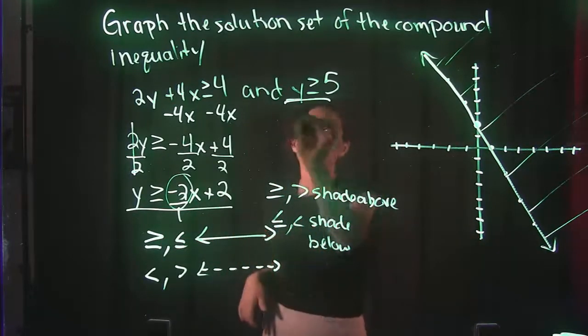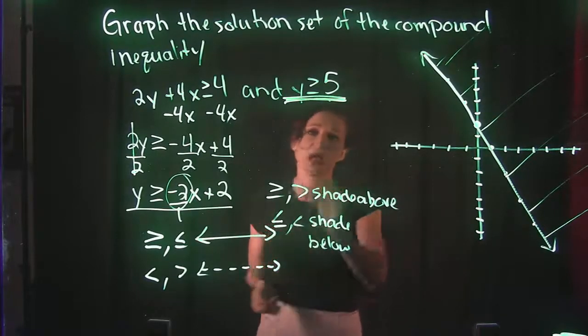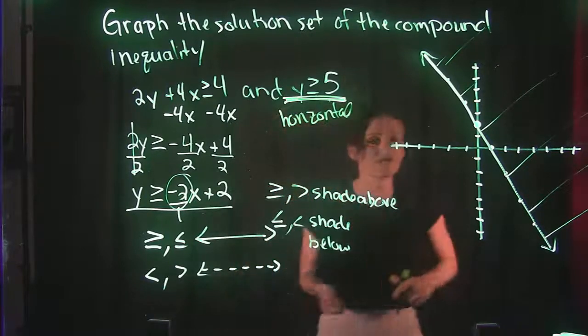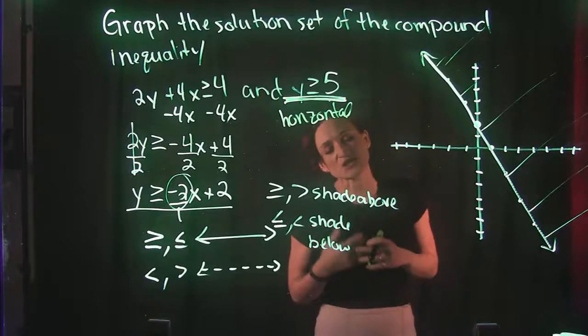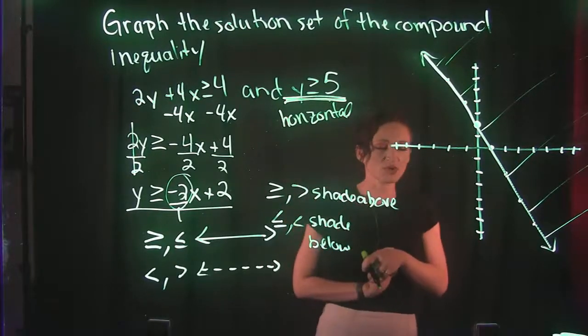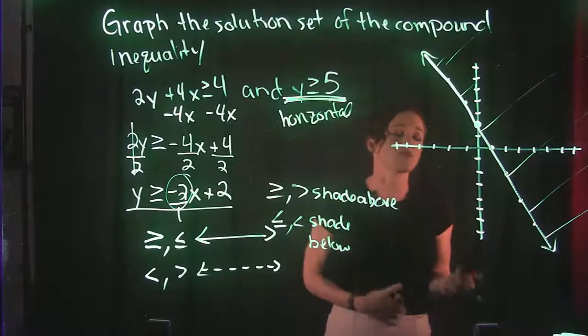For our other line, we have y is greater than or equal to 5. So this is one of our special lines. This is a horizontal line at a positive 5. So it says y is greater than or equal to 5. So we have that greater than or equal to symbol, which means we do have a solid line at 5, where y equals 5.